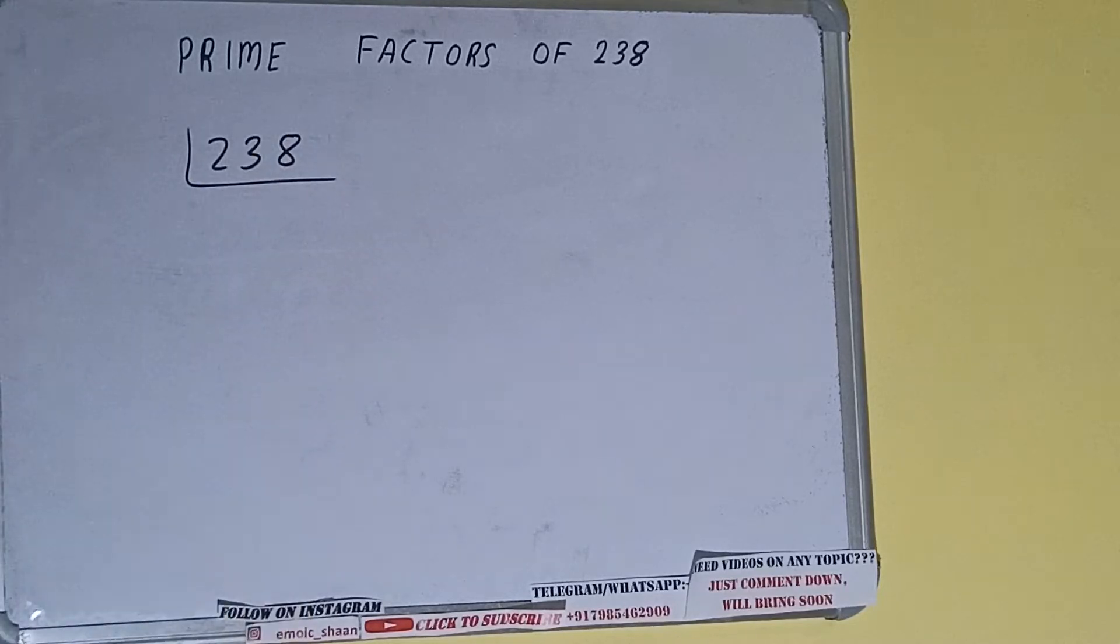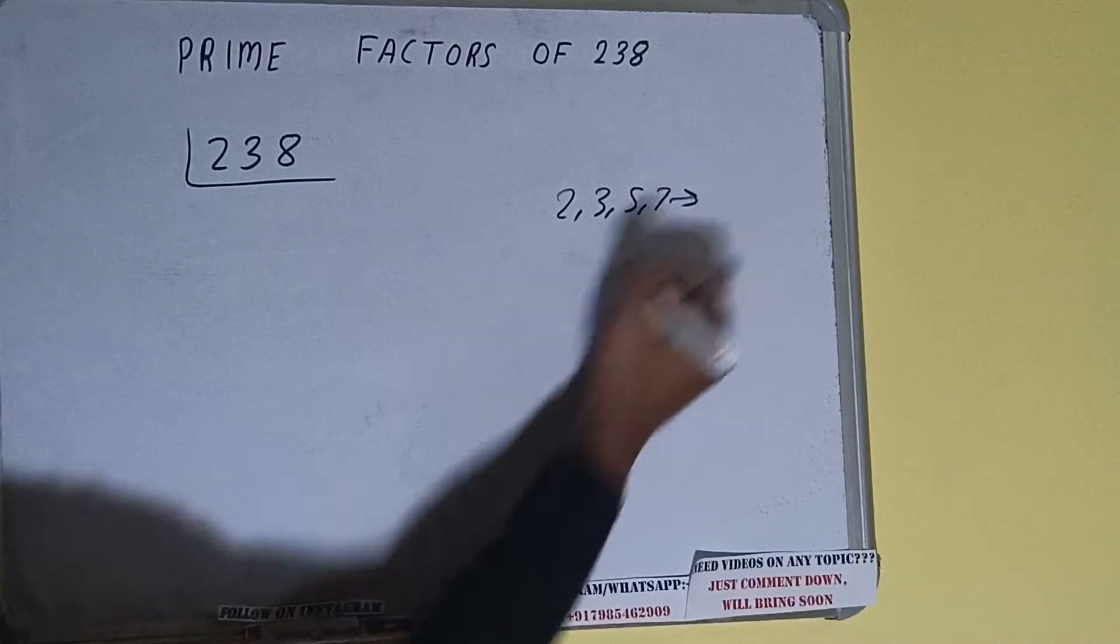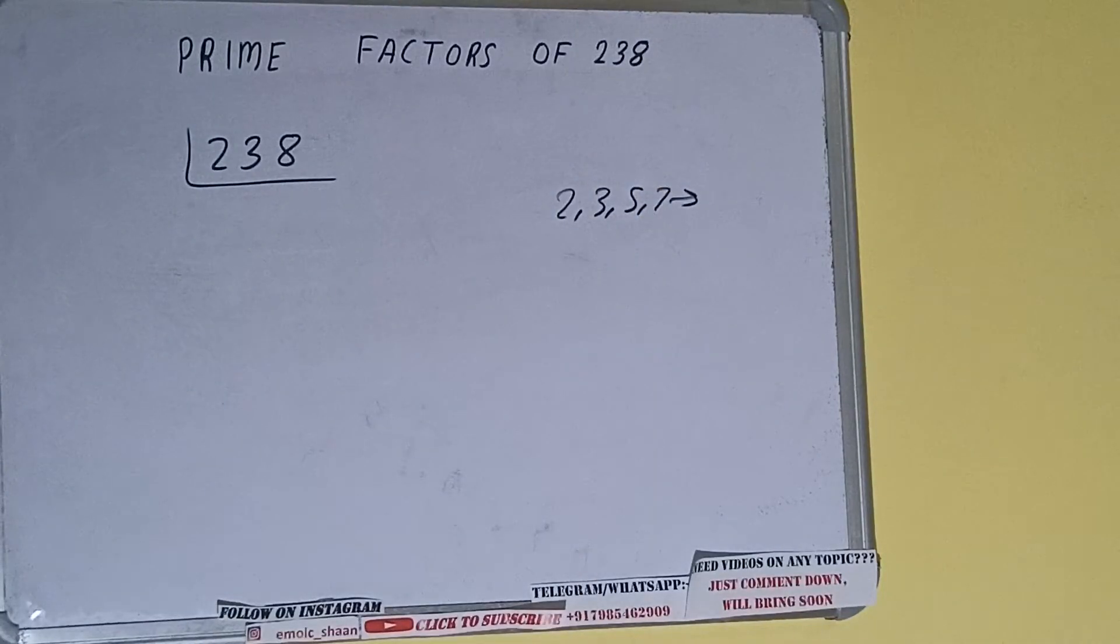The next thing we need to know is what are prime numbers. Prime numbers are numbers that are divisible by one and the number itself, like 2, 3, 5, 7, and so on. We'll check.